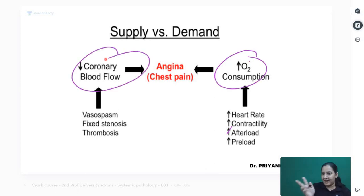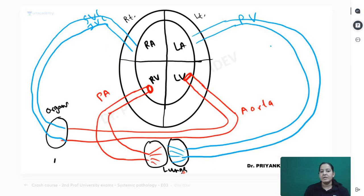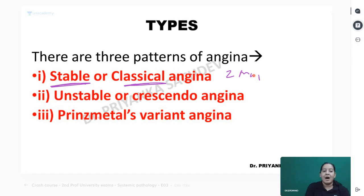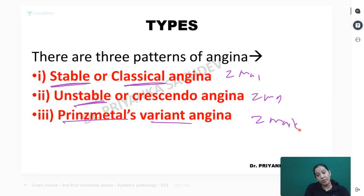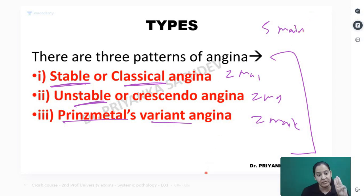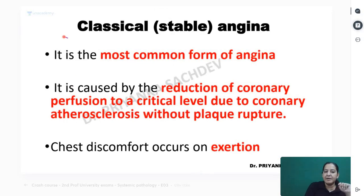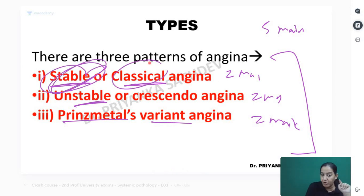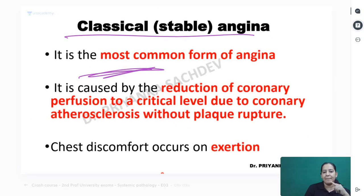There are three types of angina: stable angina (also known as classical angina), unstable angina, and Prinzmetal or variant angina. Each can come as a two-mark question individually, or together as a five-mark question. The most common type among the three is stable or classical angina.